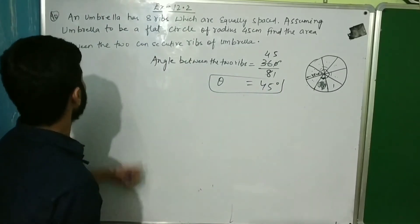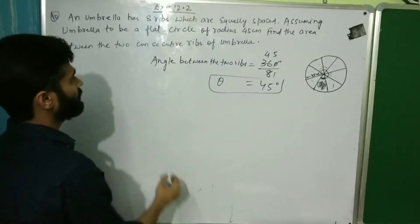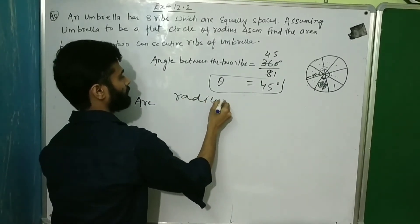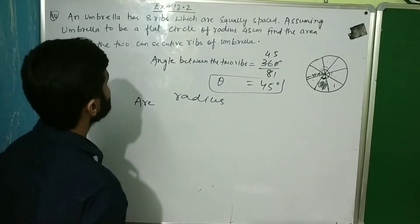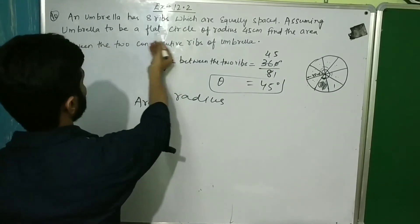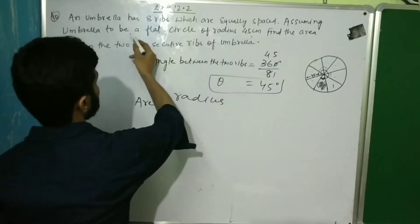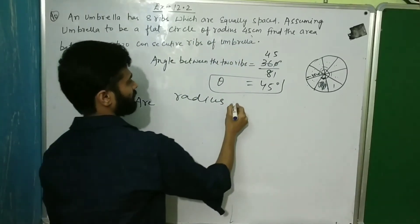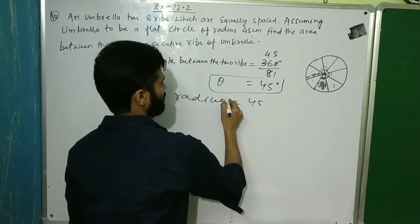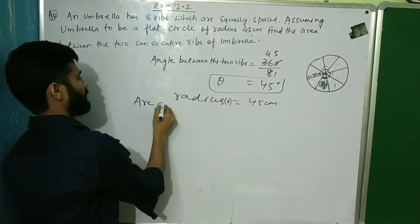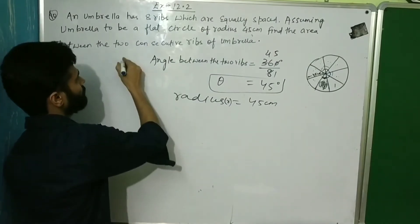I'm going to go to the area. Radius, how much is it? Find radius. Umbrella to be, radius to be 45 cm. Flat circle of radius, how much is 45? Radius R equals 45 cm. Here is the solution.